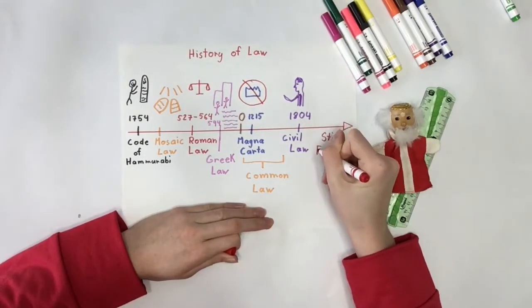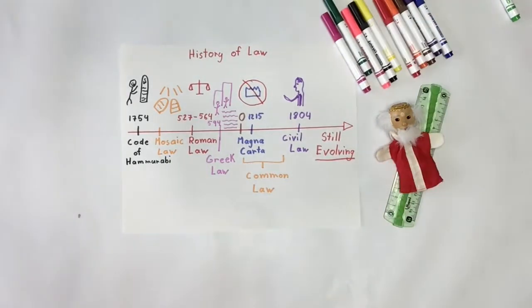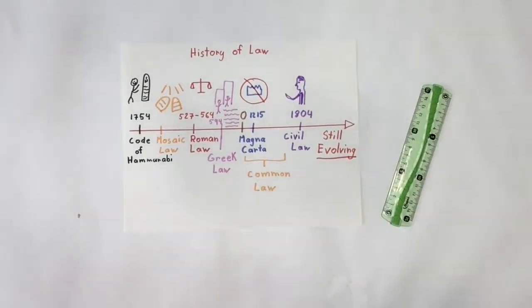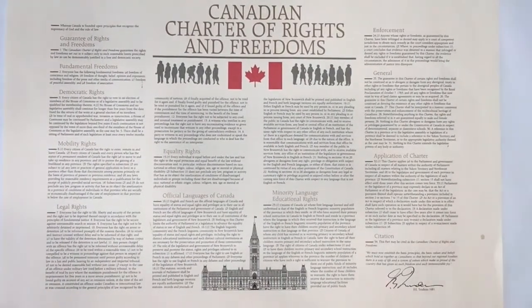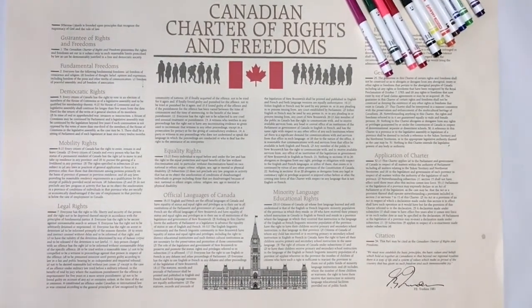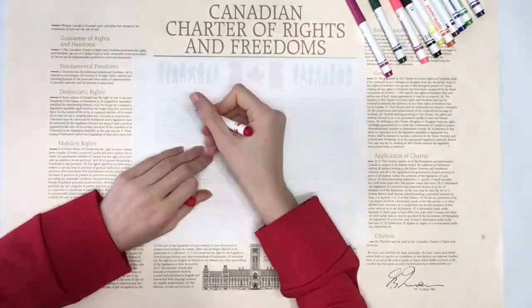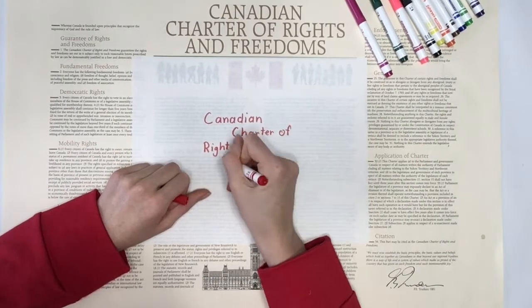Canada's law is still evolving and changing today. Canadian law is affected by what Canadians want to see in their law, but also international law, like the laws the United Nations make. The basis for all Canadian law is the Canadian Charter of Rights and Freedoms. On April 17, 1982, the Canadian Charter came into force. All other Canadian laws had to be revised after this point in order to comply with the Charter.